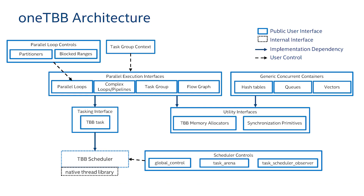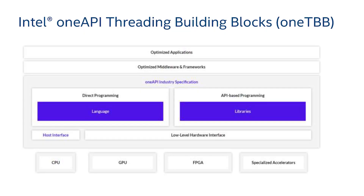All of these things are built on top of our scalable memory allocators and synchronization primitives, which are also available if you want to use them directly. So how does TBB fit into OneAPI? We have applications, middleware and frameworks, and direct programming — that's DPC++. Then we have API-based programming like OneMKL, OneDNN — and TBB fits in some ways in all of these. TBB itself is available as a library included as part of OneAPI.